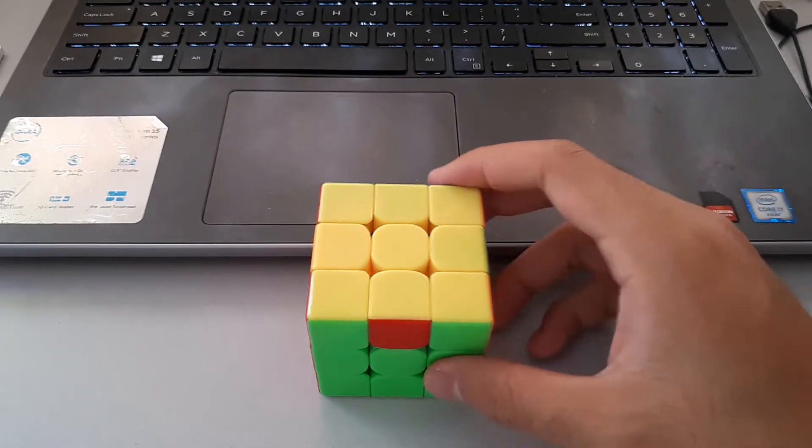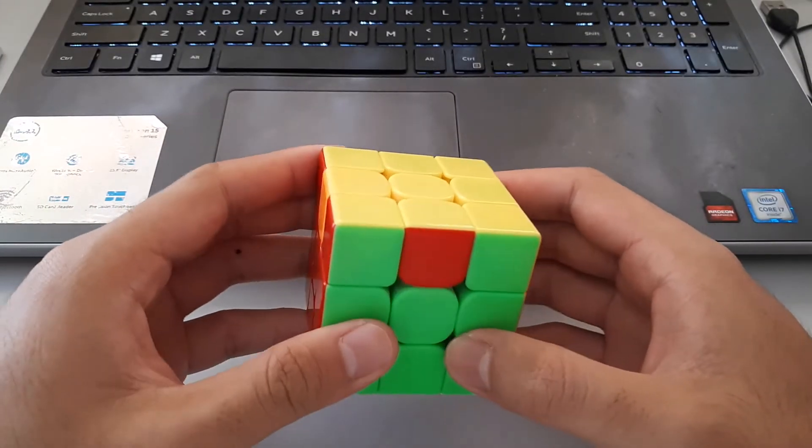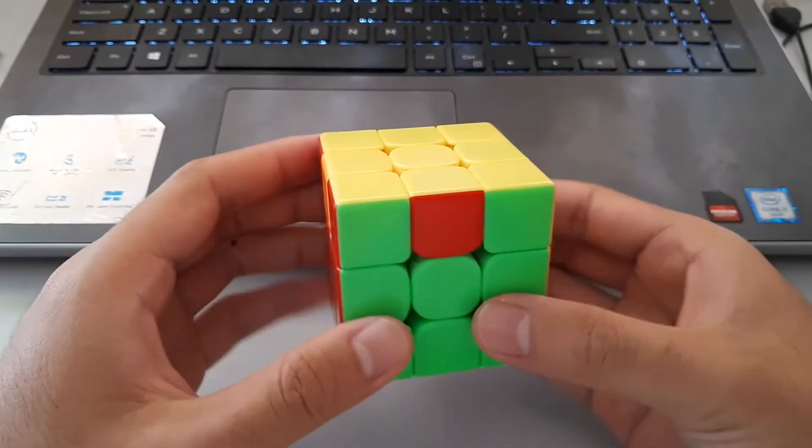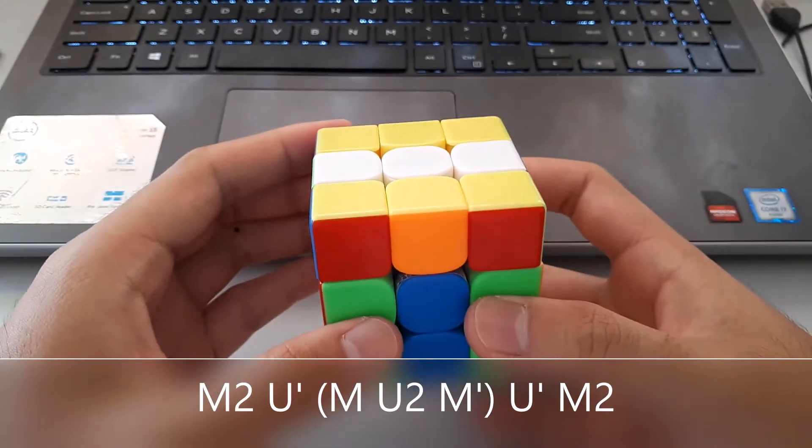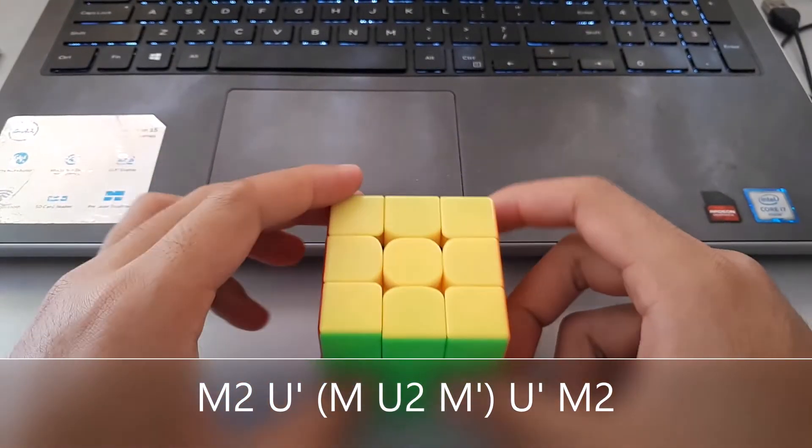So for the U-B perm, the algorithm is once again very similar and very easy to remember as well. So once again we only look at opposite colors, so opposite colors here on the left side. So once again we start with an M2, move the opposite colors into the middle, do a U2-M', match the colors up, and finish with an M2. So very easy to remember and really fast as well.